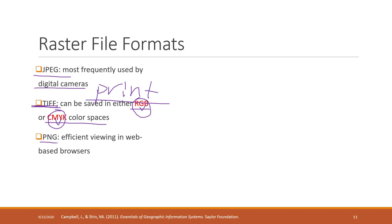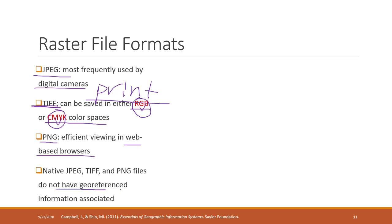The last commonly used raster format is PNG, which is efficient for viewing on web-based browsers. Keep in mind that these raster formats do not contain spatial information — they are not georeferenced by themselves. You need a separate file to indicate the projection or coordinate system. So a JPEG by itself does not contain spatial information; you need a separate projection file to indicate which area it represents.